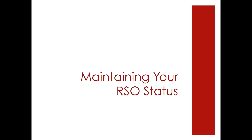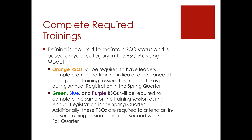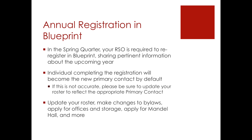There are a number of steps required to maintain your RSO status from year to year. Firstly, your RSO is expected to complete required annual training. Training is required to maintain your RSO status and is based on your category in the RSO advising model. All orange RSOs will be required to have leaders complete an online training in lieu of attendance at an in-person training session. This training takes place during annual registration in the spring quarter. Green, blue, and purple RSOs will be required to complete the same online training as orange groups at the same time. In addition, green, blue, and purple RSOs are required to attend an in-person training session during the second week of fall quarter.